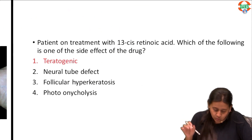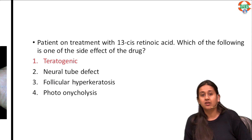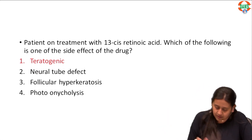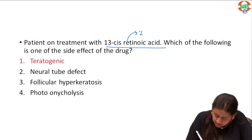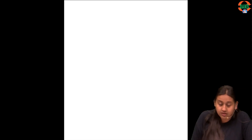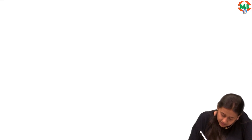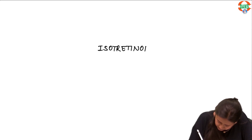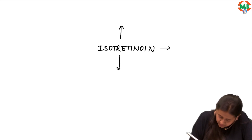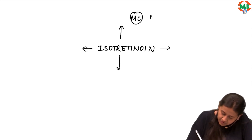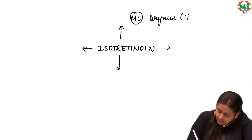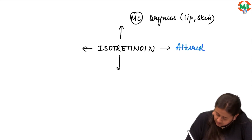Next question: a patient is treated with 13-cis retinoic acid — which of the following is a side effect of this drug? Remember, this is nothing but another name for isotretinoin. It is very important to know the side effects of isotretinoin, as we have seen many questions on this in exams. The first and most common side effect is dryness — patients get dryness of lips and dryness of skin. There is also altered LFT and an increase in triglyceride levels.